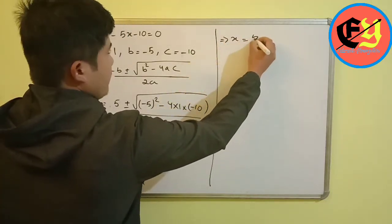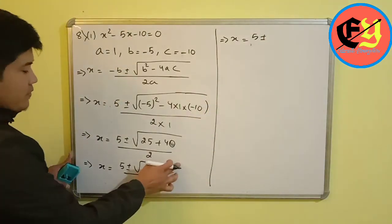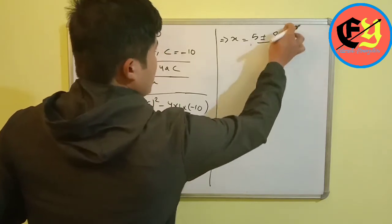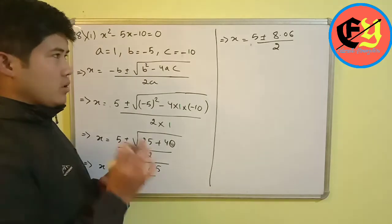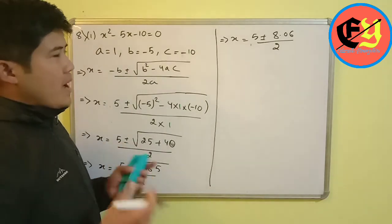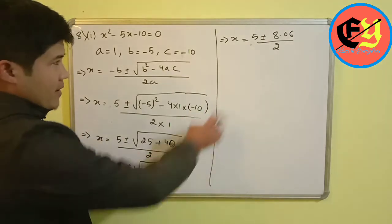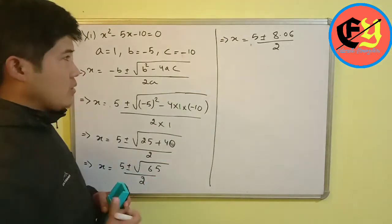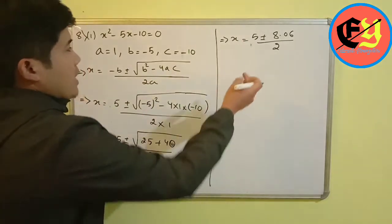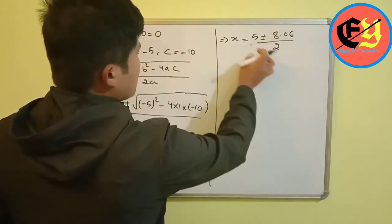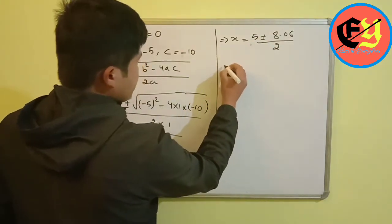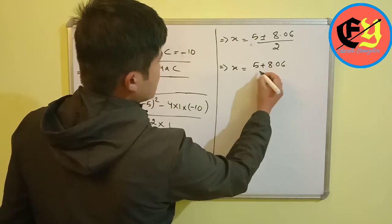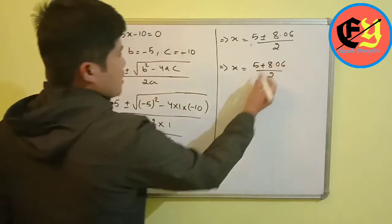So x equals 5 plus or minus root 65. From log tables or square root tables, root 65 equals approximately 8.06. So x equals 5 plus 8.06 divided by 2, or x equals 5 minus 8.06 divided by 2.